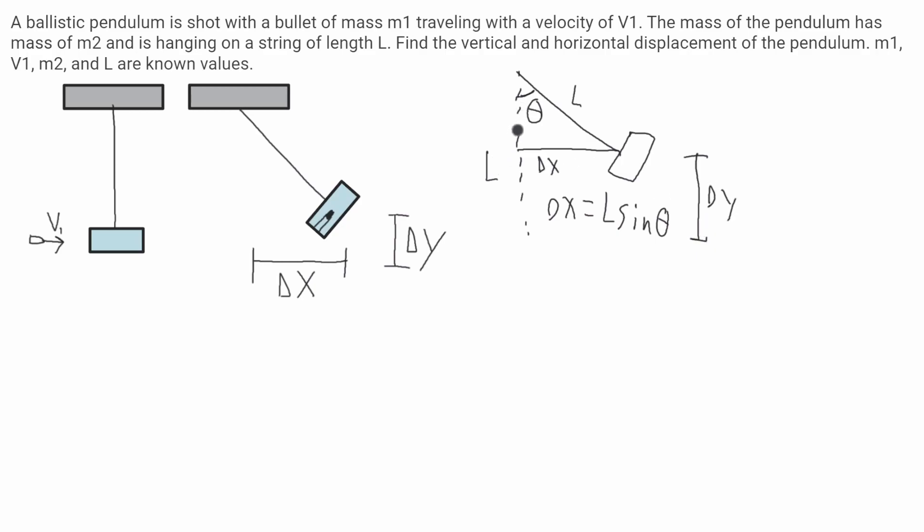The vertical displacement will be this distance here, which if you notice the total length here is this entire line, but the delta y is only from this point here down there. So delta y will be equal to L minus this component of the triangle here, which will be L cosine of theta. So delta y equals L minus L cosine theta.